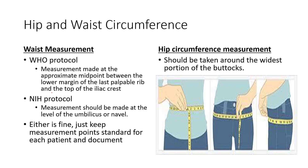There are two different protocols you can follow: one from the World Health Organization, one from the NIH. The biggest thing is just keep with one and be consistent. The WHO measures the midpoint between the lower rib and the iliac crest; the NIH protocol uses the level of the umbilicus or navel. This is a little limited for patients who are class two or class three obesity or above — they have a large pannus, their belly button begins to move and droops. So you probably need to go by the anatomical region. Just be consistent and document the standard with each patient.